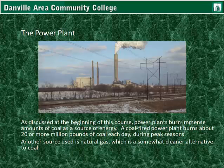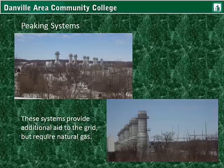As discussed at the beginning of this course, power plants burn immense amounts of coal as a source of energy. To put this in perspective, a coal-fired power plant burns about 20 or more million pounds of coal each day during peak seasons. Another source used is natural gas, which is a somewhat cleaner alternative to coal, but is less abundant. Peaking systems are used to provide additional power to the grid when needed, but require natural gas.